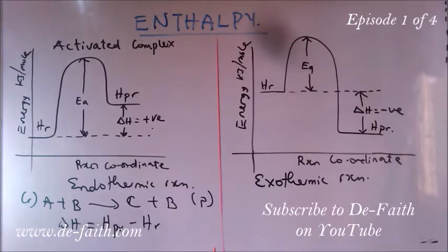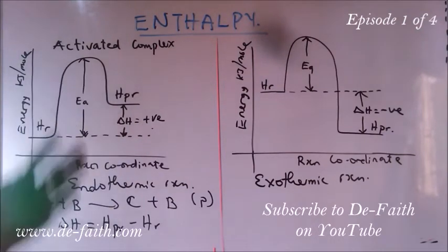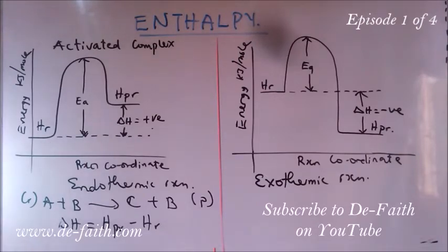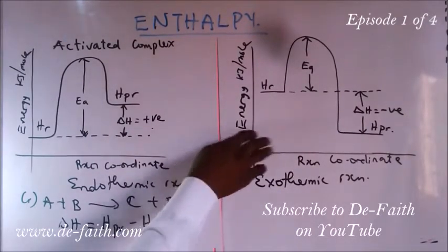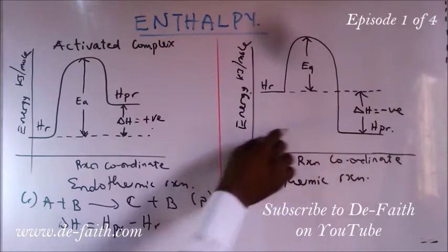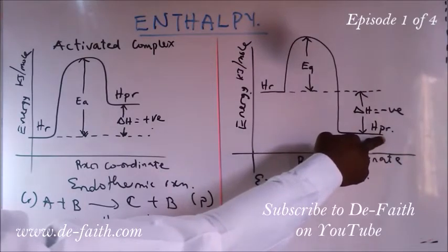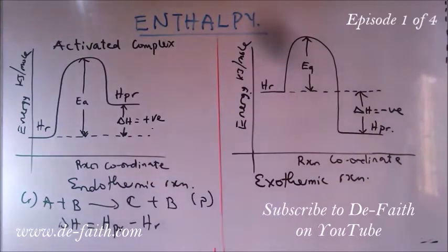In the energy profile for an endothermic reaction, the heat of the reactant is lower than the heat of the product, so the product is higher than the reactant and delta H is positive. This means the reaction has to absorb energy from the surrounding for it to occur. In the exothermic reaction, the heat of the reactant is higher than the heat of the product, meaning the reactant had enough energy to drive the reaction. Hence, delta H — which is heat of the product minus heat of the reactant — gives a negative value.